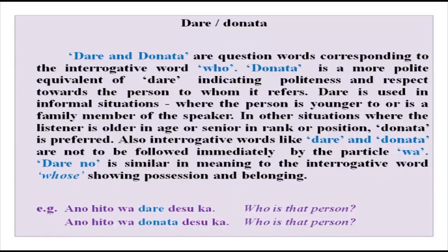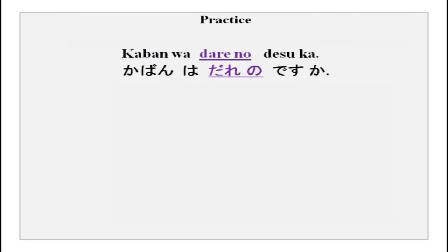Dare no is similar in meaning to the English interrogative word 'whose,' showing possession and belonging. You have done a lot of vocabulary and you have done particle no. So over here we have something written: kaban wa dare no desu ka. Dare no means 'whose.' With ka you can make it into a question — you can ask someone whose bag it is, and instead of kaban, you can put any other noun that you want.